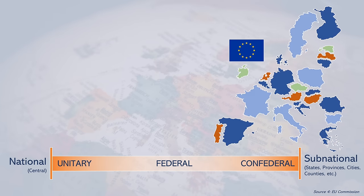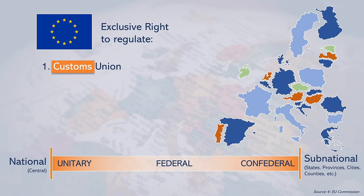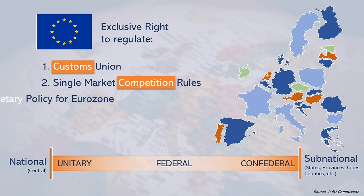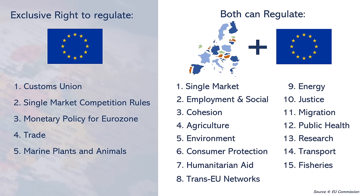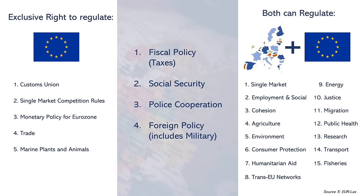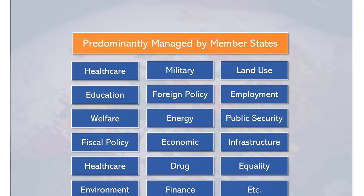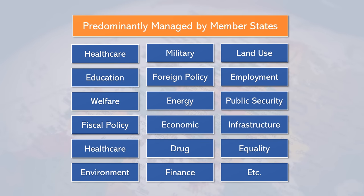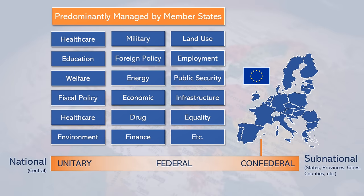A lot of power clearly still resides with the member states, as the EU has exclusive rights to legislate in only five areas: the customs union, competition rules for the single market, monetary policy for eurozone countries, trade, and marine plants and animals. There are also 15 areas of shared power, and four policy areas where member states have veto rights, meaning very little gets done. A long list of areas are predominantly managed at country level, placing the EU closer to a confederal model than a federal one.